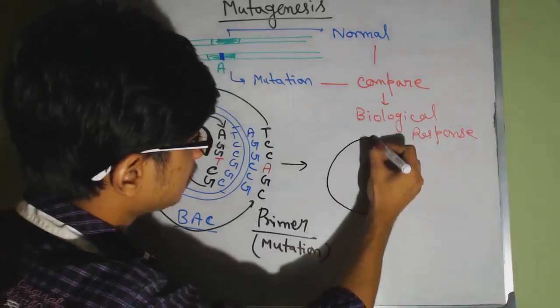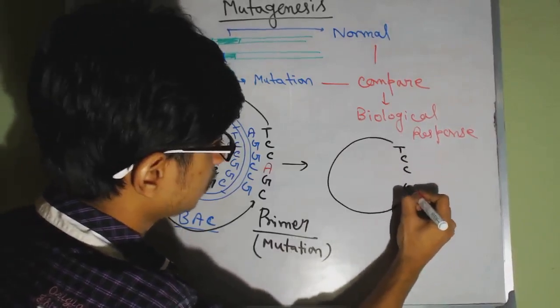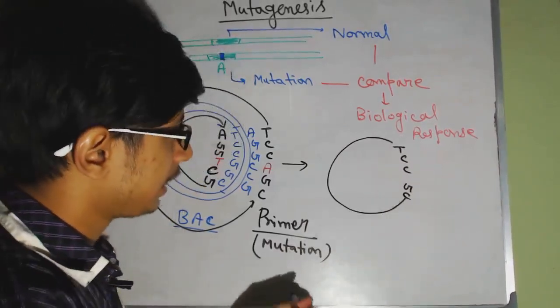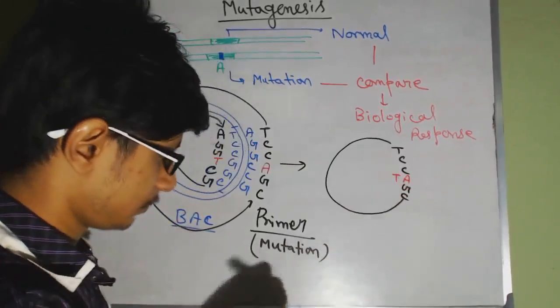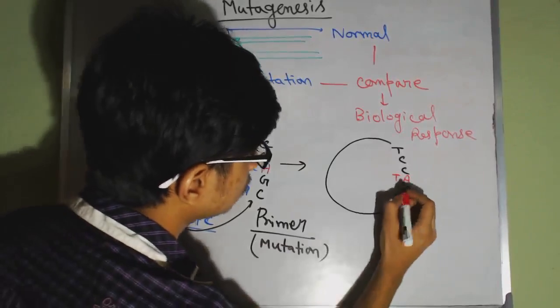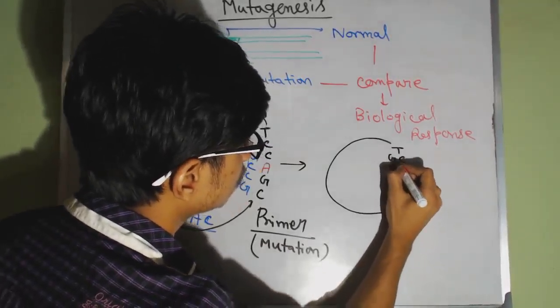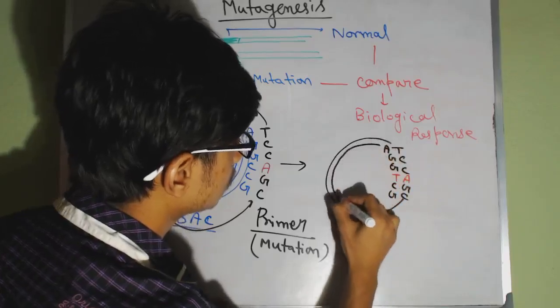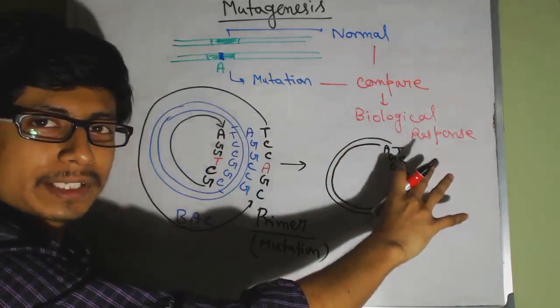we will get a sequence like this, T, C, C, A in the middle, G, C, and then we have something like this, which will be separated from this.